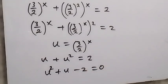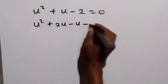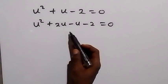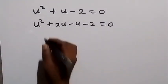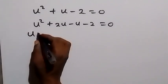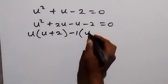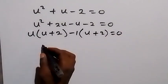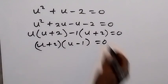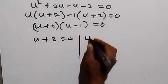We rearrange to form a quadratic equation and factorize. This becomes u squared plus 2u minus u minus 2 equals 0, because 2u minus u gives us u, and when we multiply we get minus 2. We group and factor: u is common from the first group, giving u times (u plus 2), and minus 1 is common from the second group, giving minus 1 times (u plus 2). So (u plus 2)(u minus 1) equals 0.